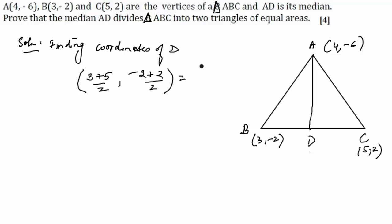which equals (4, 0). So D has coordinates (4, 0). That is the first part of the answer. The second part is we'll find the area of triangle ABD by